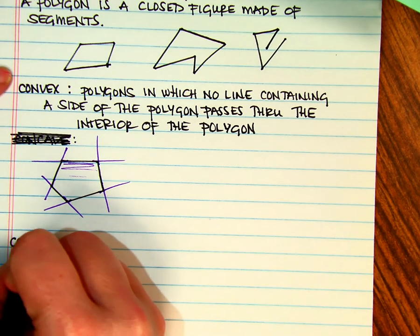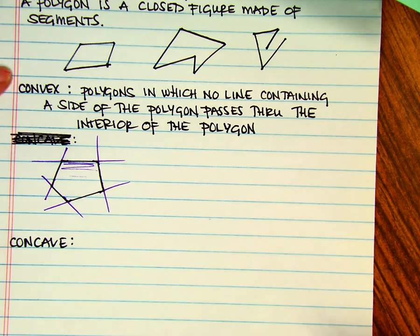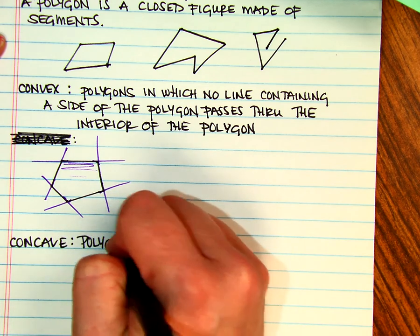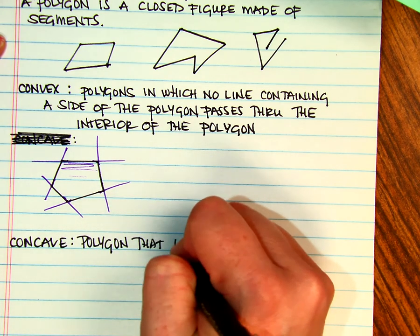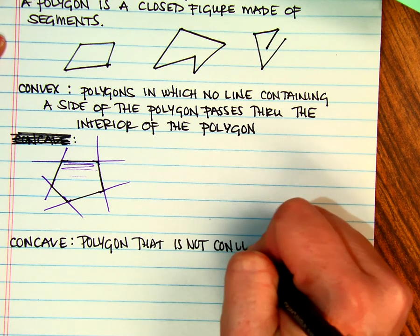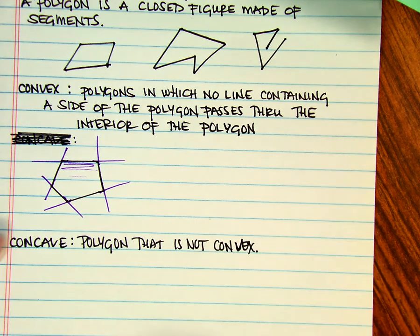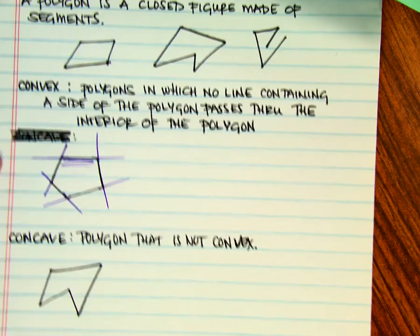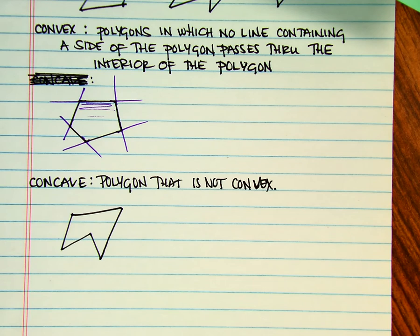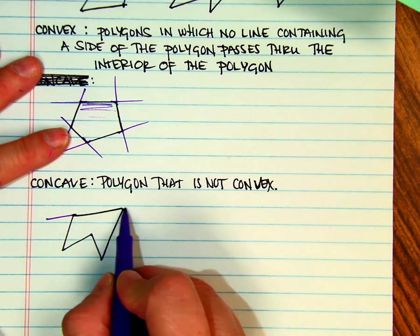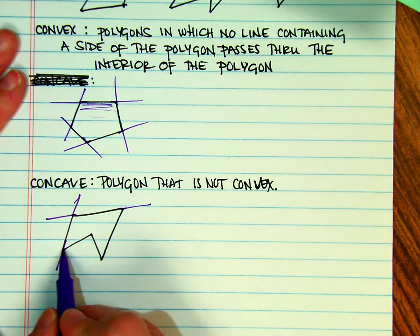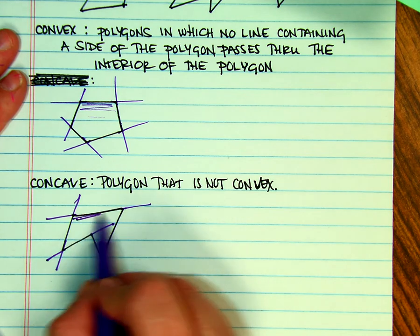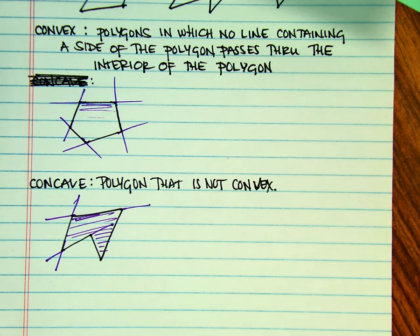A concave means that you have a side that is caved in. The definition is polygon that is not convex. So something like that would be considered a concave. So if I were to extend my sides out, look what happens here. This extension goes into my original polygon. So that's why it is concave.